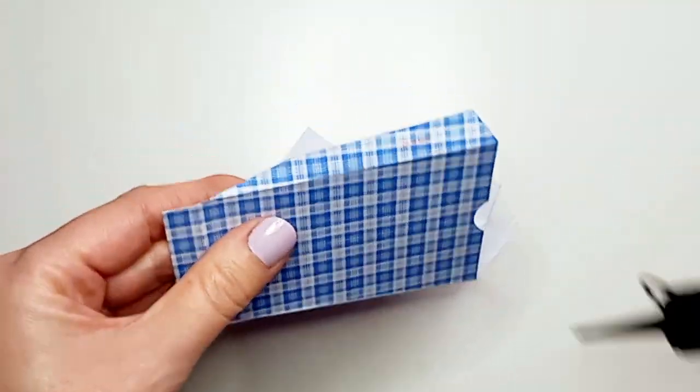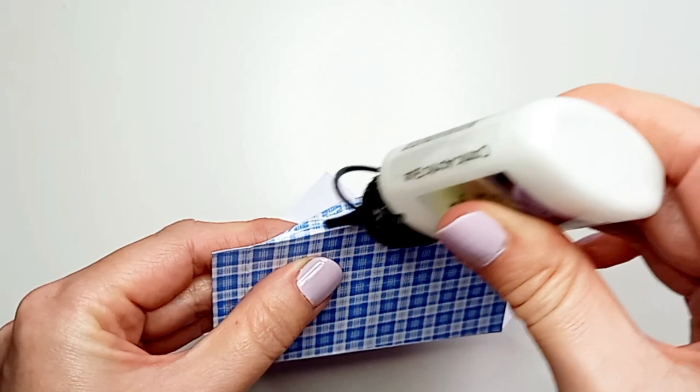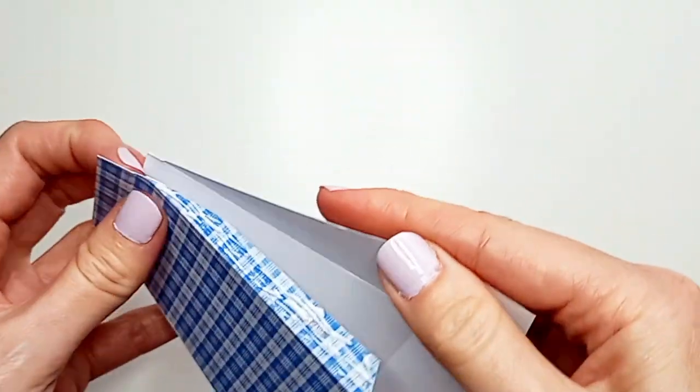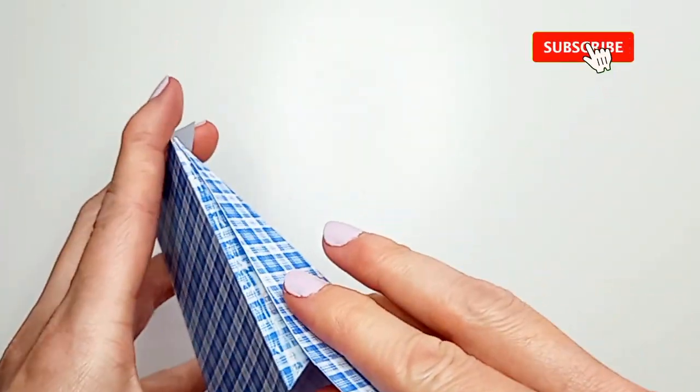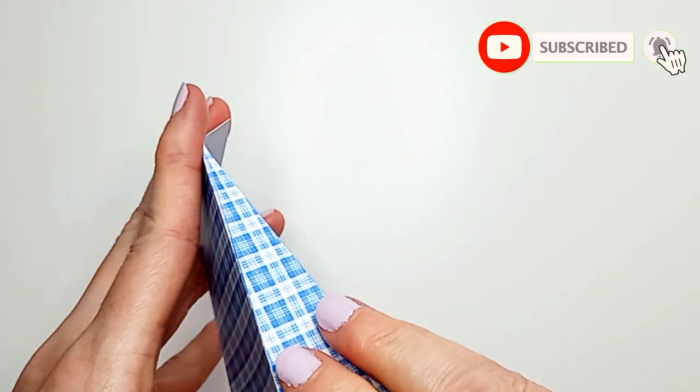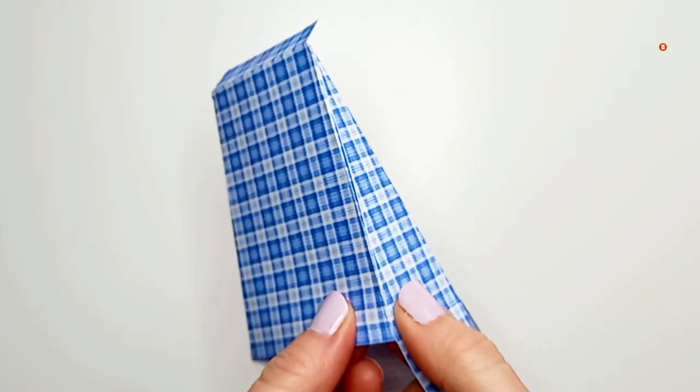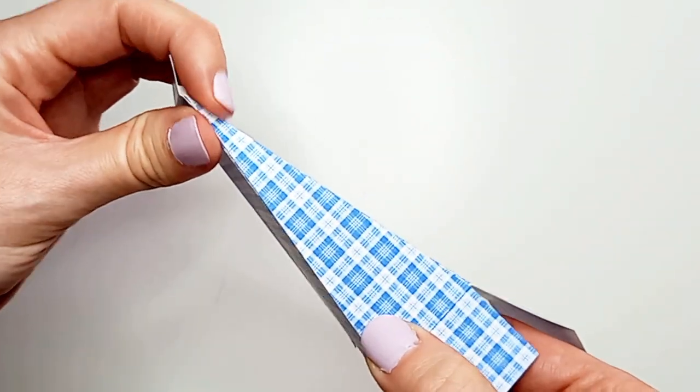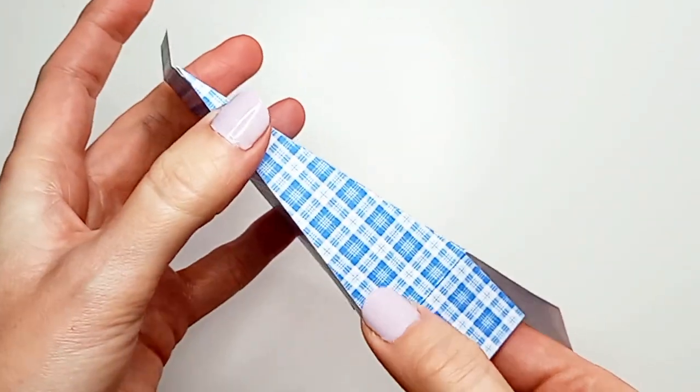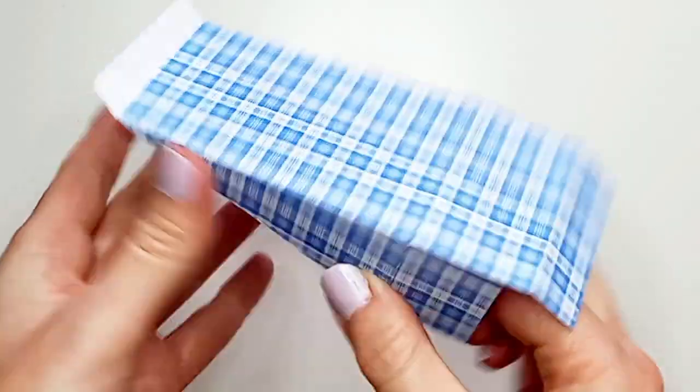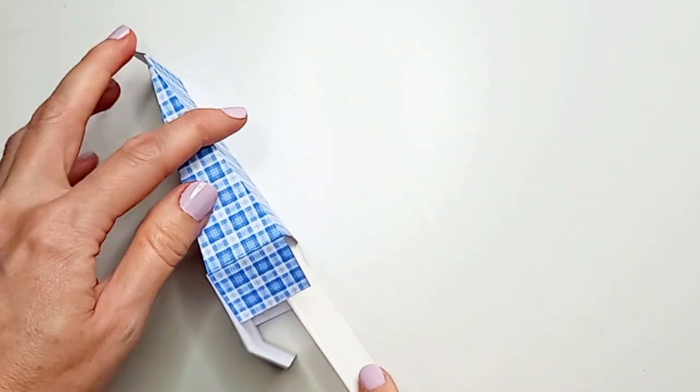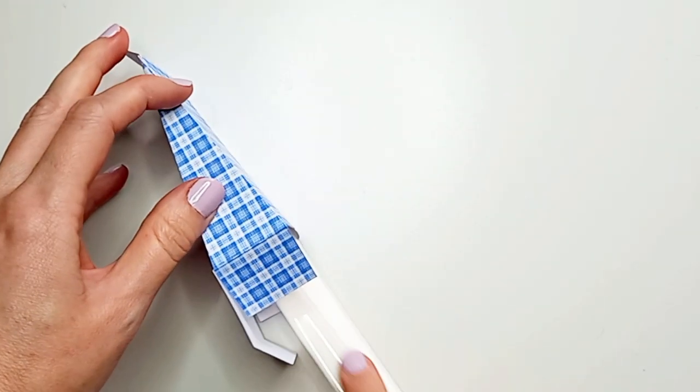Then do the same with the other side. You can press it down from the inside with a bone folder or a ruler.